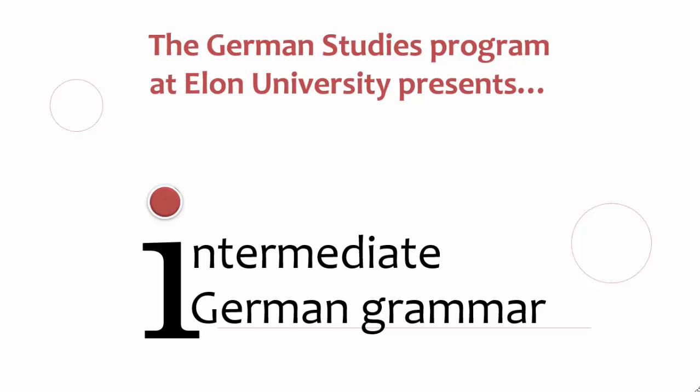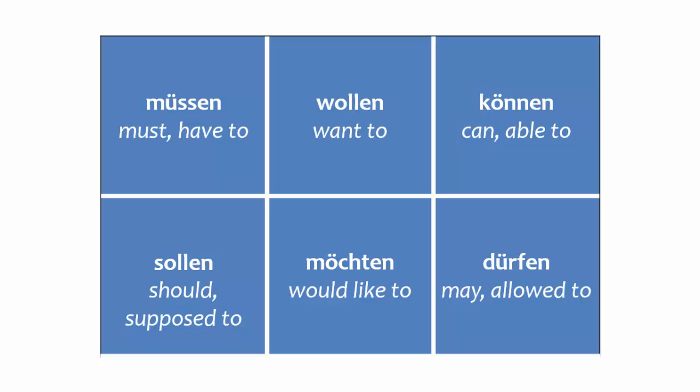Welcome to Intermediate German Grammar, presented by the German Studies Program at Elon University. This presentation explains how to use modal verbs in the past tense. Modal verbs indicate abilities, desires, obligations, and the like. If you need a refresher on modal verbs, watch the video on modal verbs in the present tense before continuing with this video.